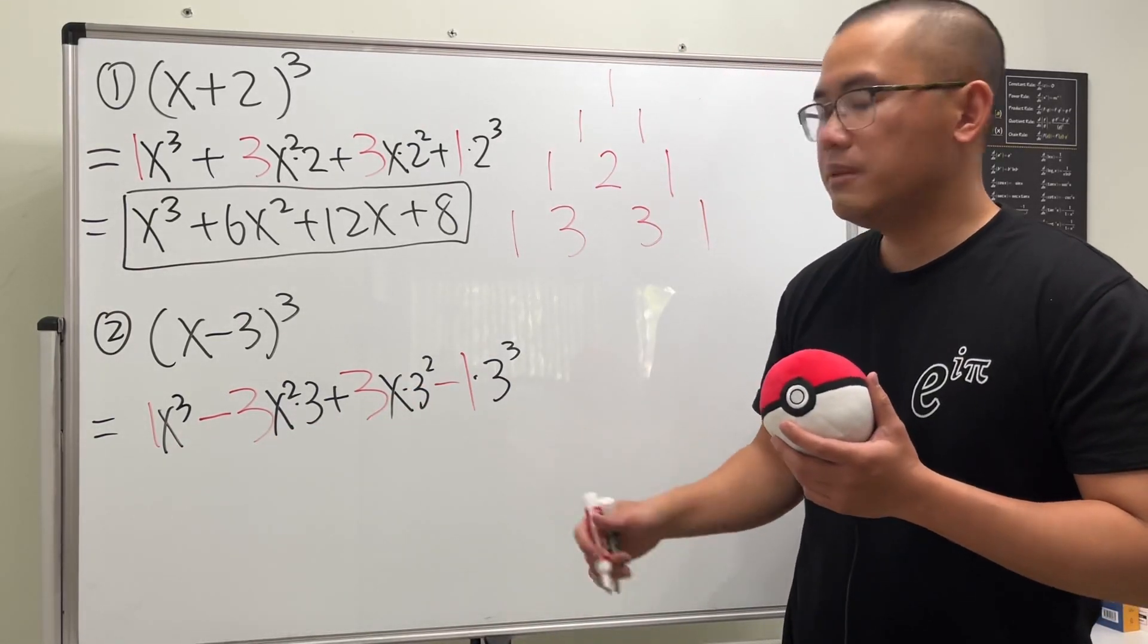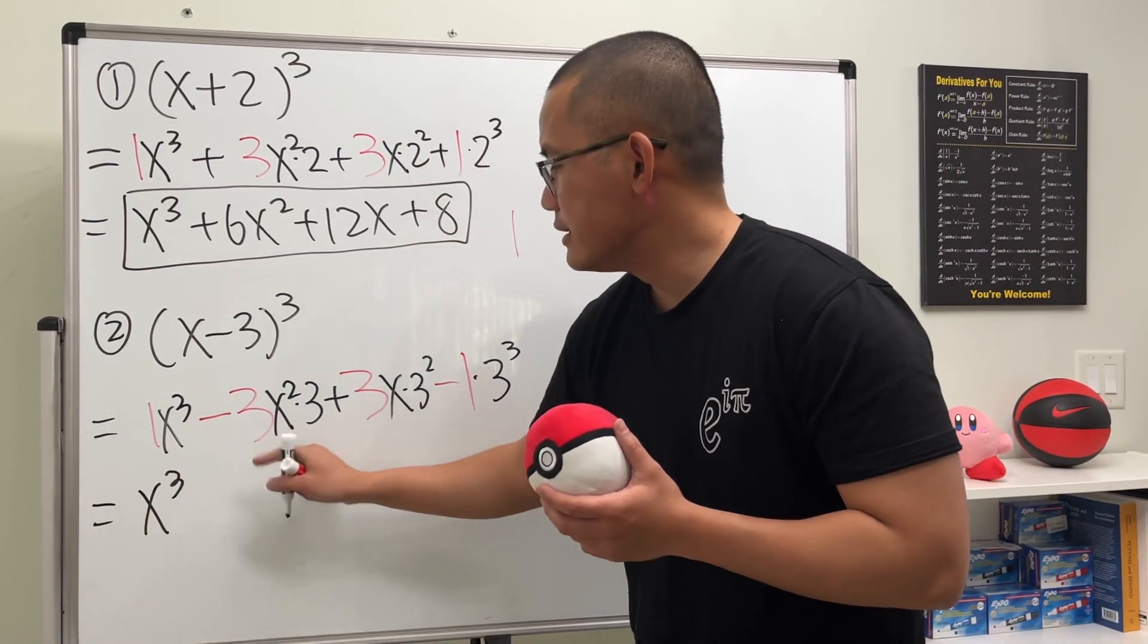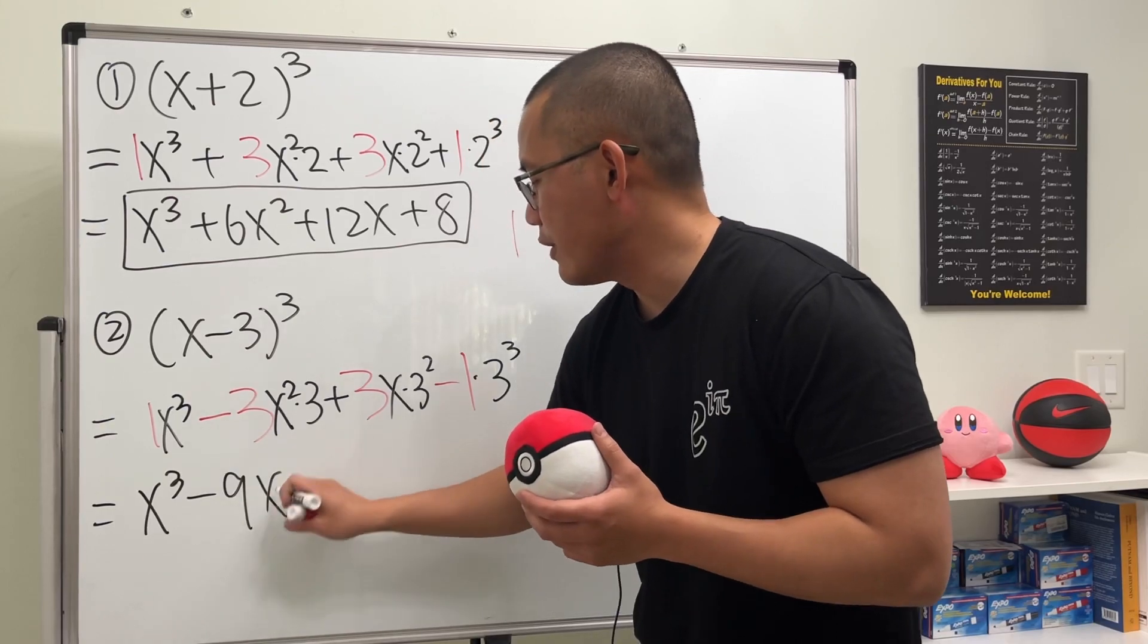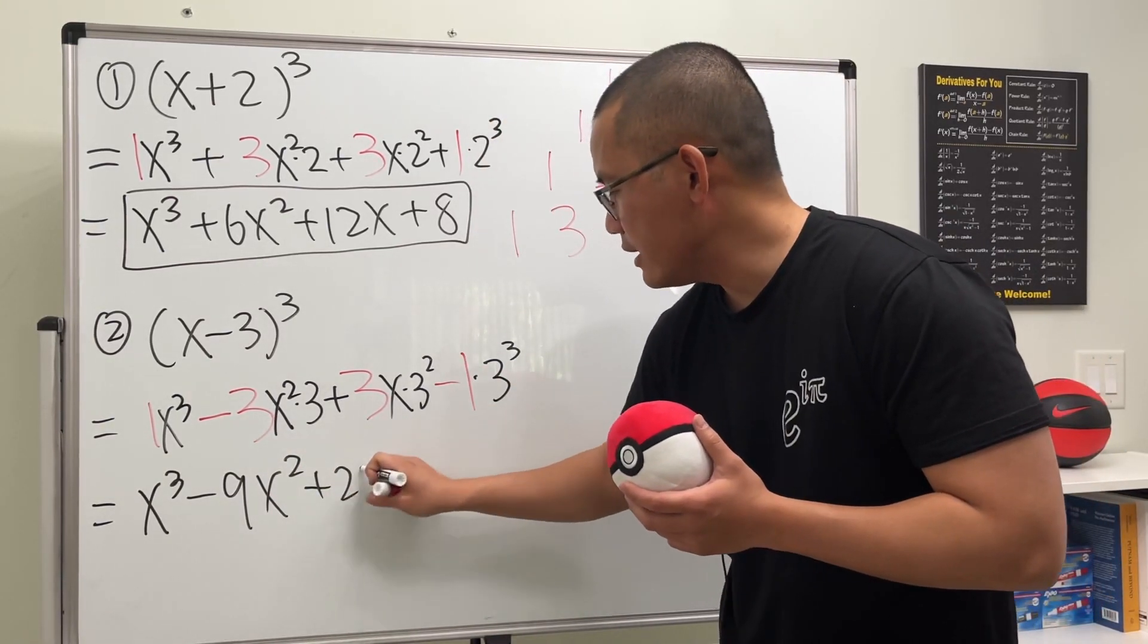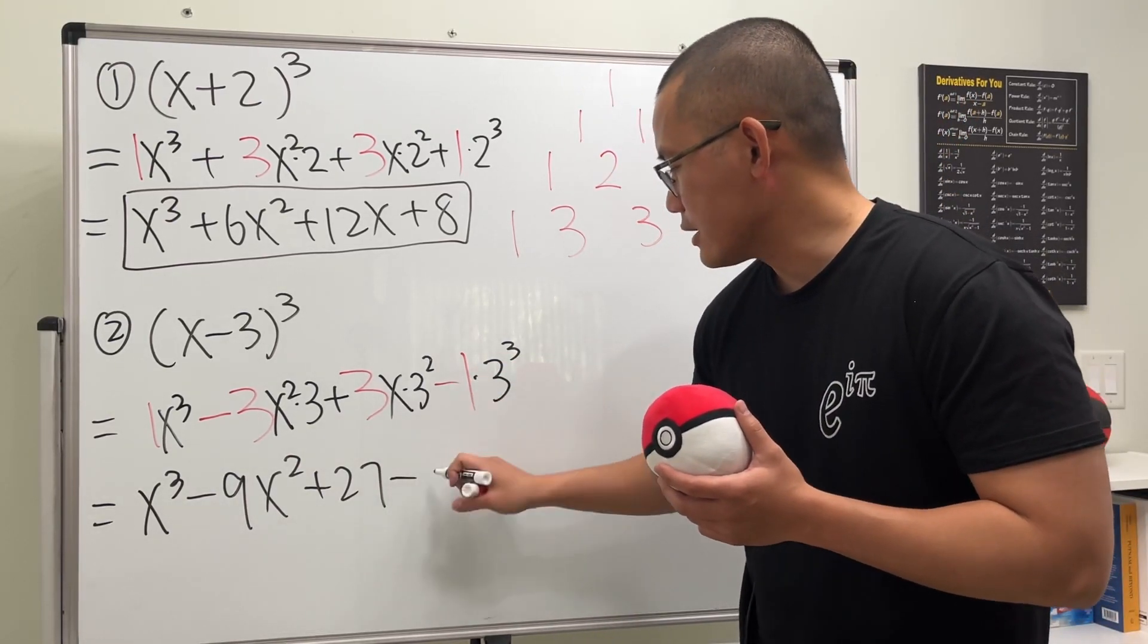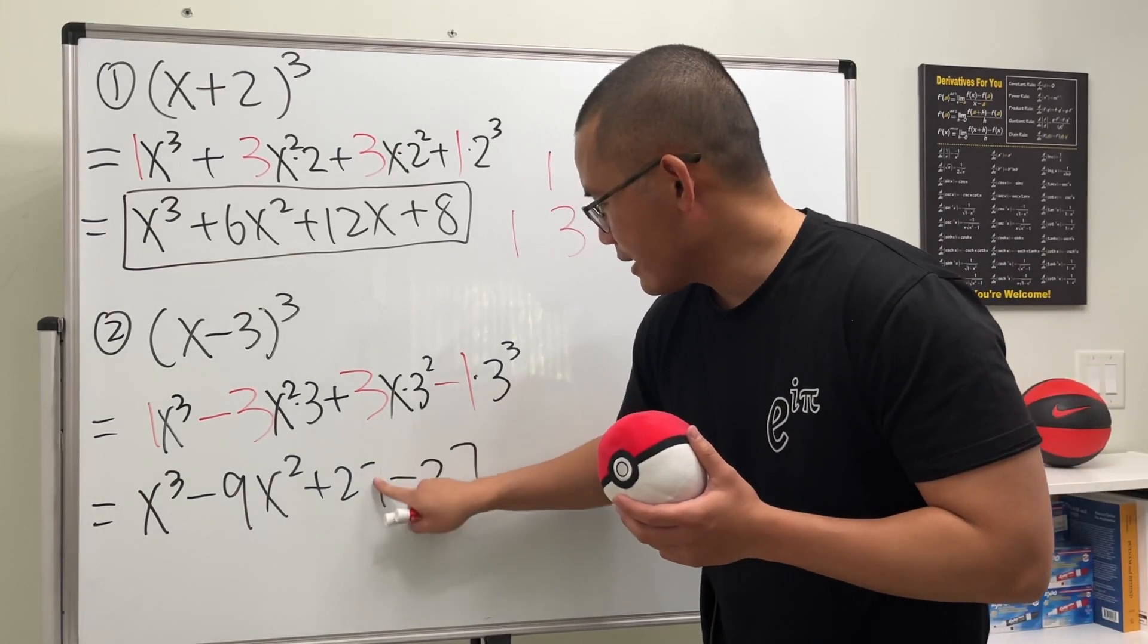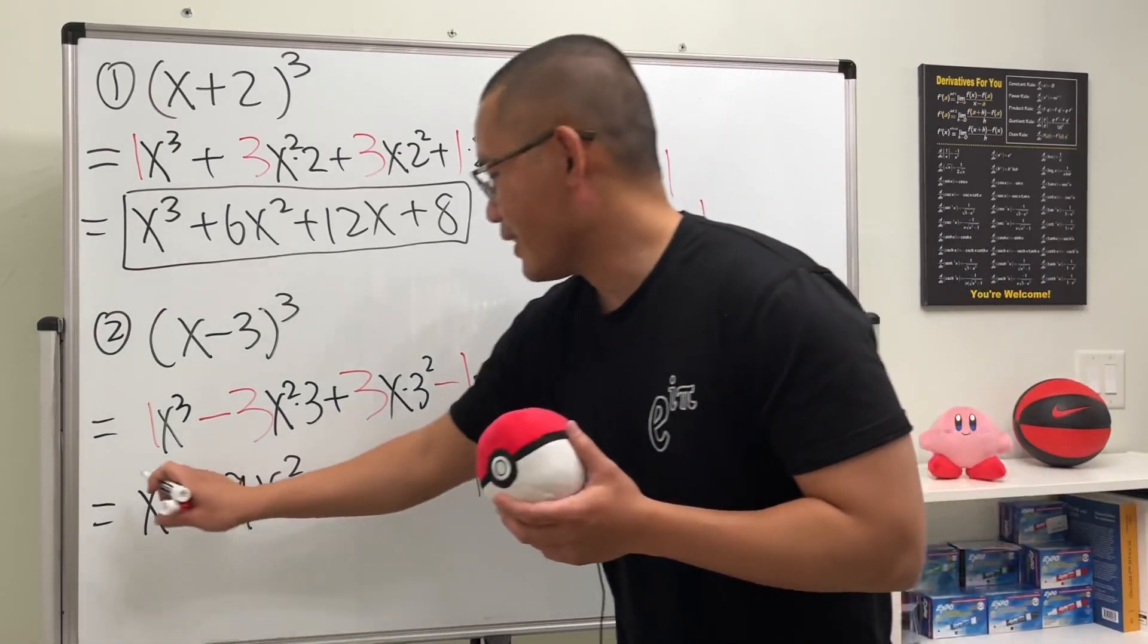And lastly we just have to multiply it out and we get x to the third power. This and that is 9 and then we have x square. This is 9 times 3, we have 27, and then again 3 to the third power is 27 times 1, and that's minus—oh it's 27x there. So this right here is it.